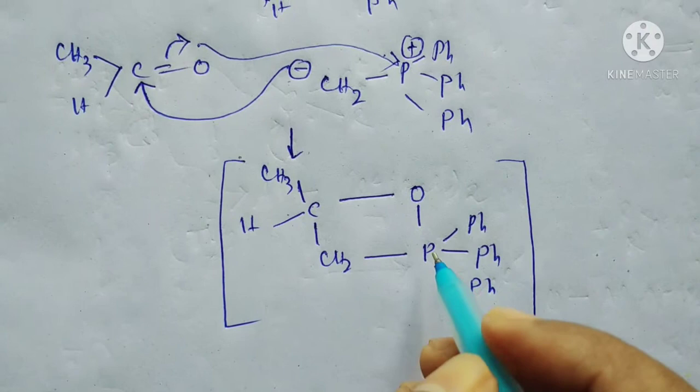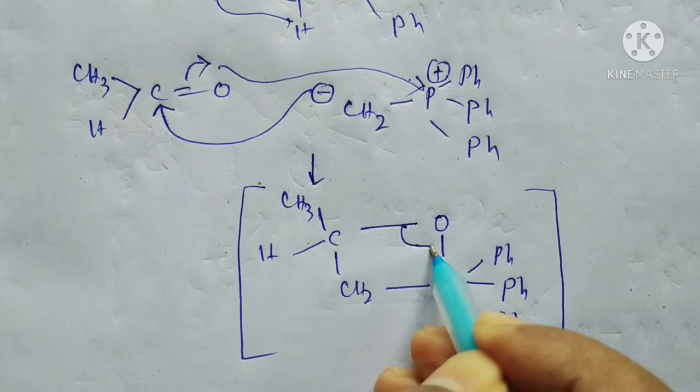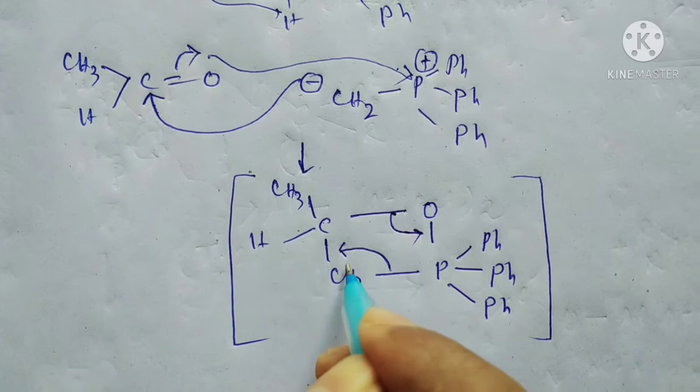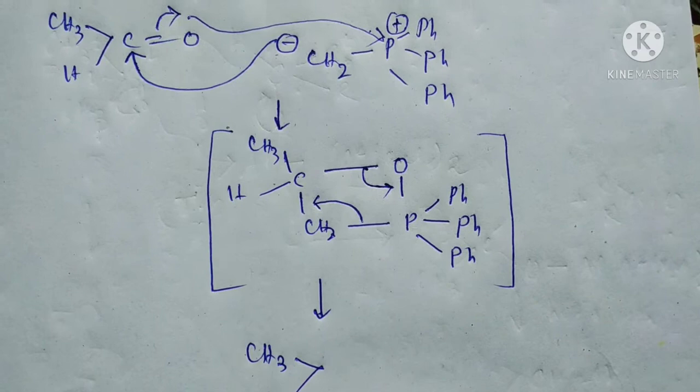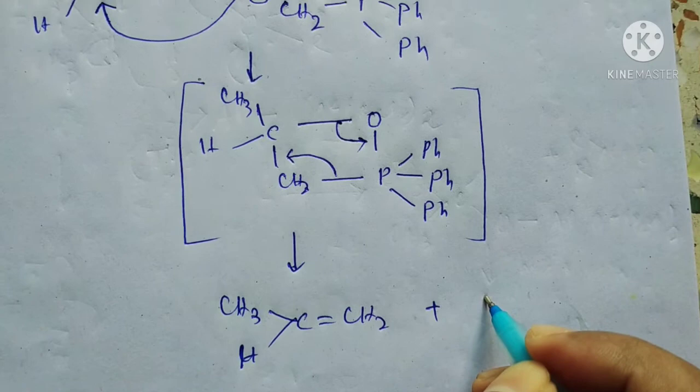This intermediate is then resolved like this. See the mechanism over here. This bond breaks, and this bond forms a double bond with carbon to form the desired alkene product.